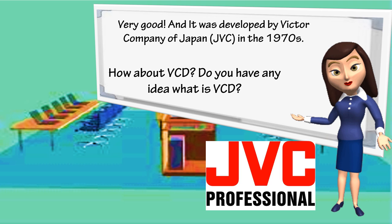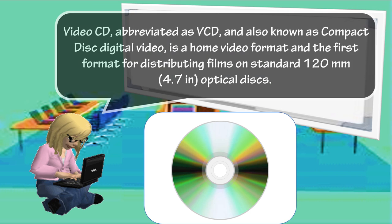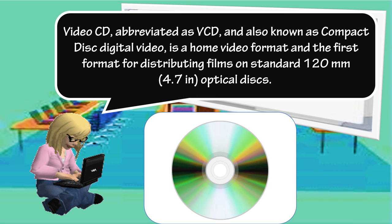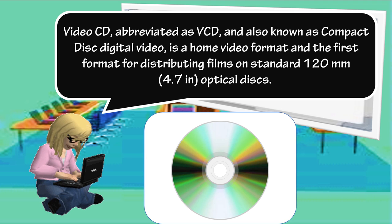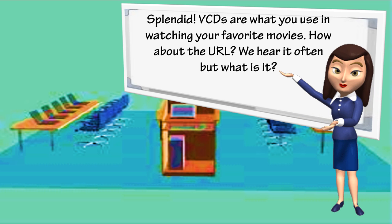How about VCD? Do you have any idea what is VCD? Video CD, abbreviated as VCD, and also known as Compact Disc Digital Video, is a home video format and the first format for distributing films on standard 120mm or 4.7 inches optical discs. VCDs are what you use in watching your favorite movies.